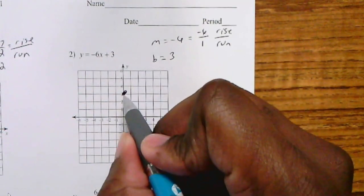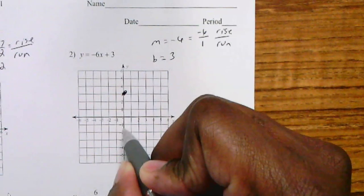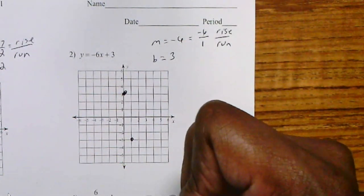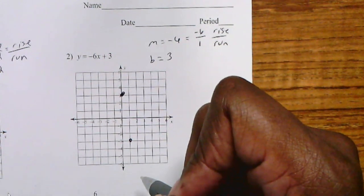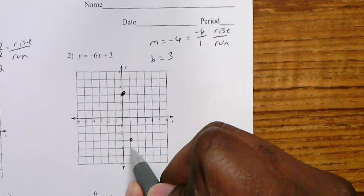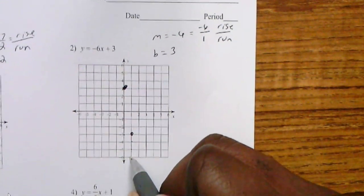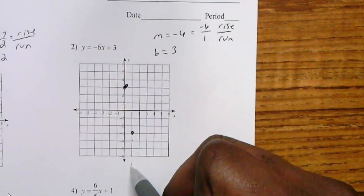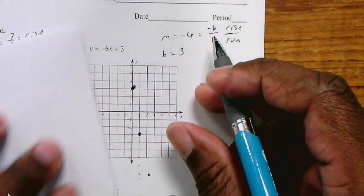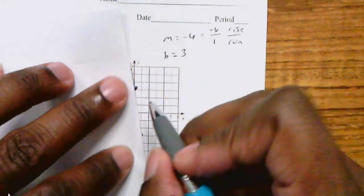My rise over run is negative 6 over positive 1. To rise negative 6 means to go down 6, so I'm going to go down 1, 2, 3, 4, 5, 6 and run 1. I got two points, which is enough, but I like to draw more than just two points. I'm going to go down 6 again and over 1. I got a better picture with three points, and that would be the line.